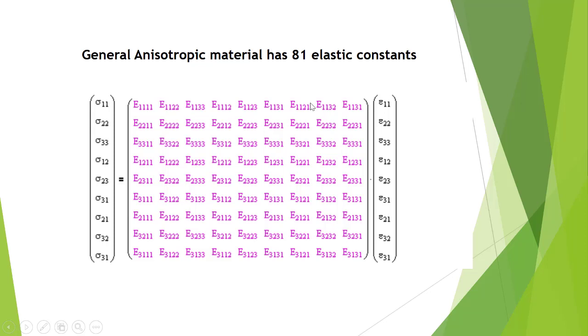That is the general Hooke's law. As we all know, general Hooke's law relates stress and strain components. Here we have 9 stress components and 9 strain components, so we require the elasticity matrix to be 9 by 9.